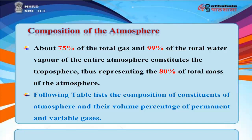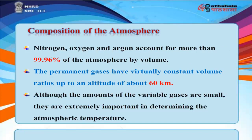Composition of the Atmosphere. About 75% of the total gas and 99% of the total water vapor of the entire atmosphere constitutes the troposphere, representing 80% of the total mass of the atmosphere. Nitrogen, oxygen, and argon account for more than 99.96% of the atmosphere by volume. The permanent gases have virtually constant volume ratios up to an altitude of about 60 kilometers. Although the amounts of variable gases are small, they are extremely important in determining atmospheric temperature.